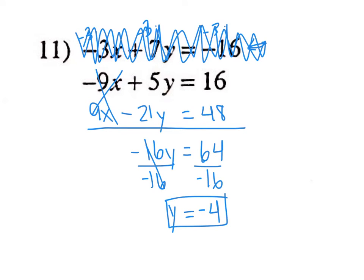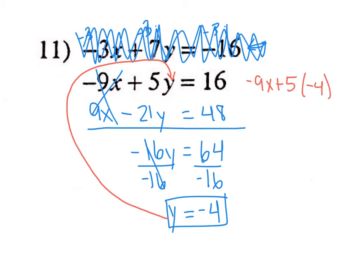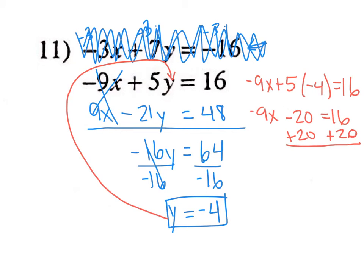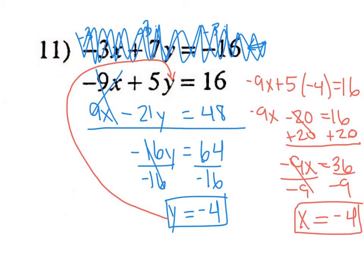Just like always, to find the other variable, plug that back in. I'll use the first equation: negative 9x plus 5 times negative 4 equals 16. That's negative 9x plus negative 20 equals 16. Add 20 to the other side: negative 9x equals 36. Divide by negative 9: x equals negative 4. So both variables are the same — my coordinate is (-4, -4). That is forced elimination.